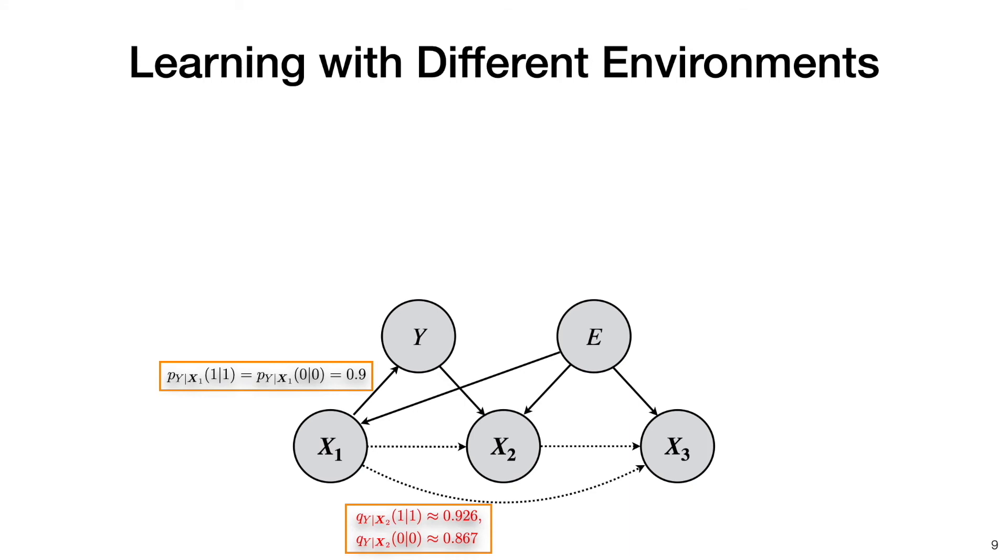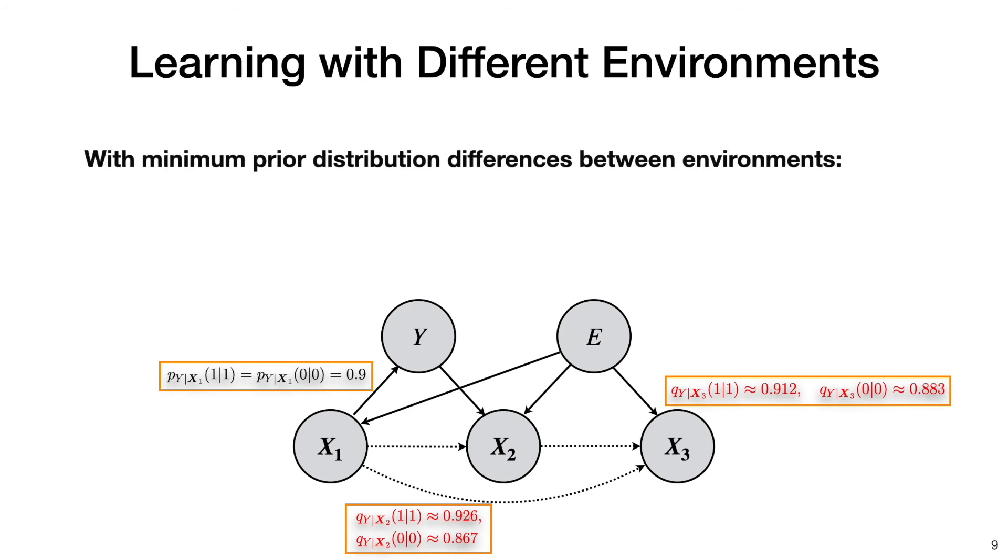Similarly, the conditional probability of y given x3 is also different across the two environments. Only x1 as the condition maintains the same conditional probability of y across the two environments. And this nice property is called invariance.